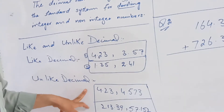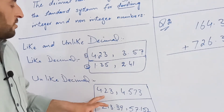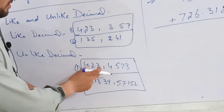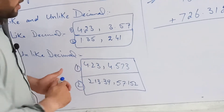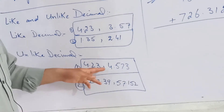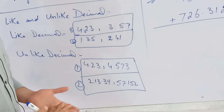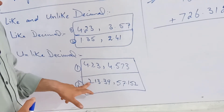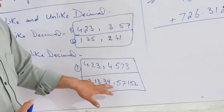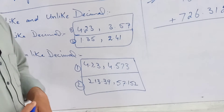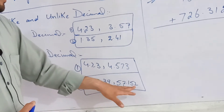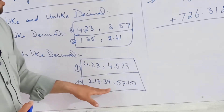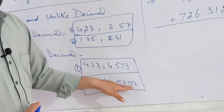Unlike decimals — like and unlike fractions. There are numbers such as 2.39 or 57.152. We are able to remember the difference in the line and the unlike fraction.